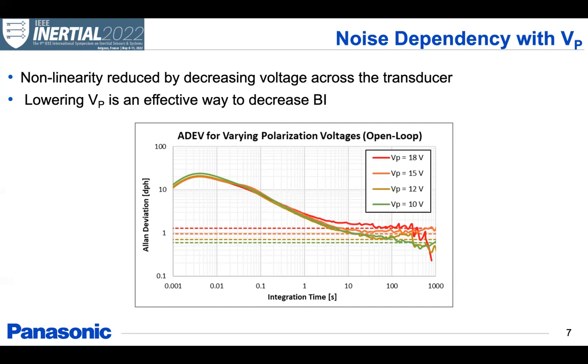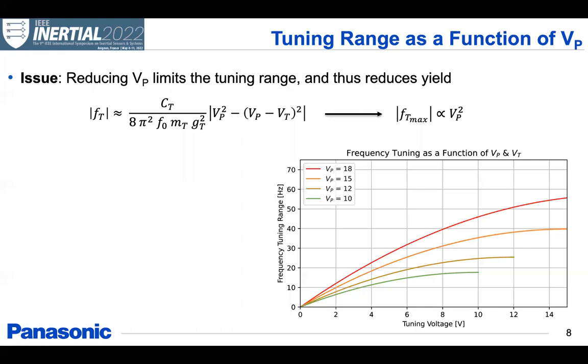Now, the challenge of reducing VP to manage noise is that it obviously reduces the quadrature cancellation and tuning range of the part. So if we take, for example, here, the expression for our frequency tuning, we can see that for positive polarization voltages VP and tuning voltages Vt, the maximum tuning range that we can get is when Vt is equal to VP, so this term goes to 0. So obviously, the maximum amount of tuning we can get is basically proportional to VP squared. So reducing VP has a great impact on how much frequency tuning we can get out of the part. In this plot, we can see the overall tuning range for different VP values, which cuts down significantly as we reduce it.